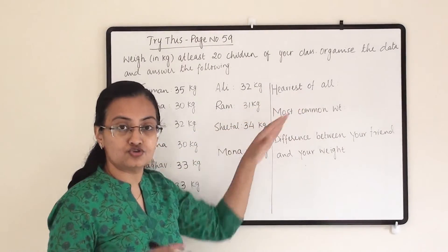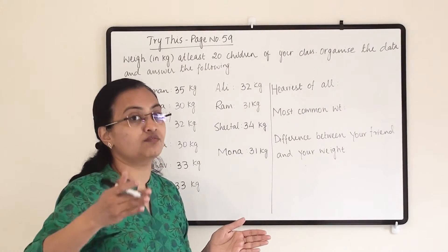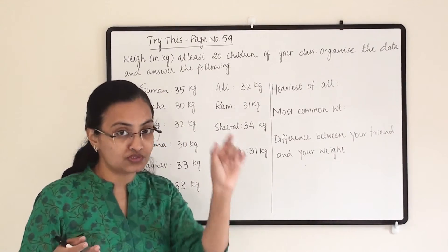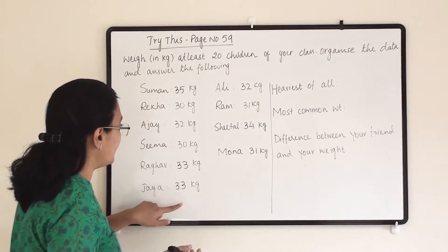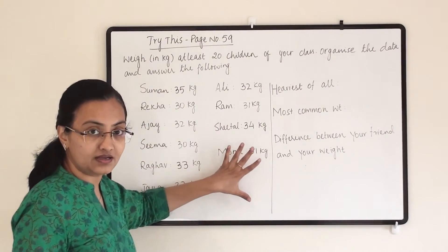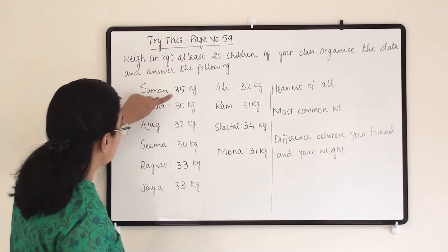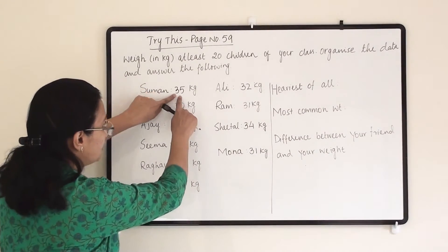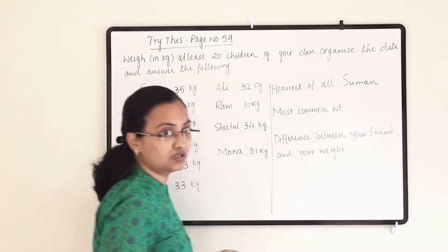The first question is about the heaviest of all. Once you arrange them in ascending order, the last observation will be the heaviest or maximum weight among those observations. So here, checking the data, 35 is the maximum — rest all are less compared to 35. So I am writing here Suman, whose weight is on the higher side.